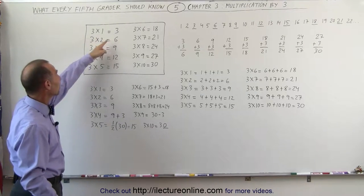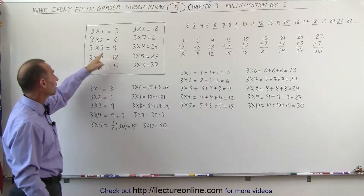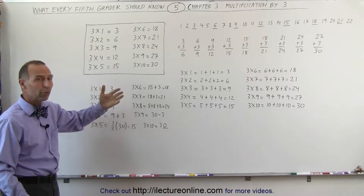3 times 1 is 3, 3 times 2 is 6, 3 times 3 is 9, 3 times 4 is 12, and so forth.